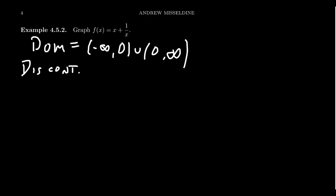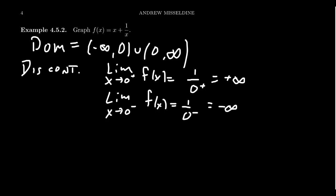Well, as we approach x equals 0 from the right, if we take the limit here of our function f of x, well, as you approach 0 from the right, you're going to end up with this 1 over 0 plus, which is positive infinity. And as you take the limit as x approaches 0 from the left of f of x, you're going to end up with 1 over 0 minus, which looks like a negative infinity. And so this is indication that we have some type of vertical asymptote at the y-axis.